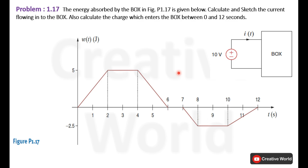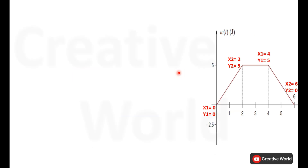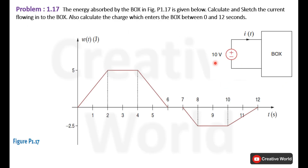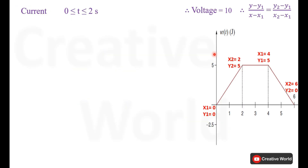We need to calculate current as well as charge. First I will calculate the current between time interval 0 and 6 seconds, using the straight line equation. The voltage for this scenario is given across the box, which is 10 volts.